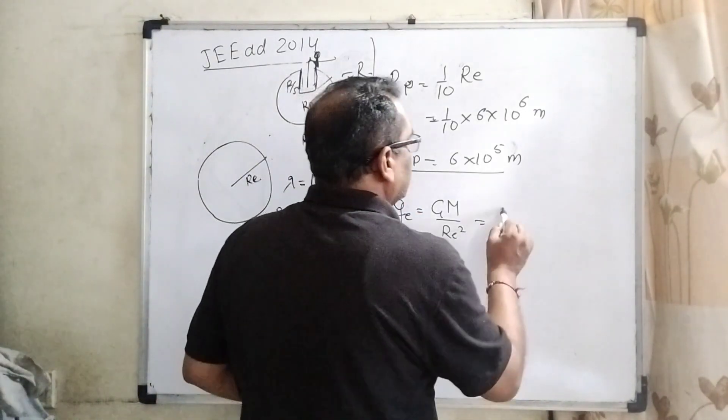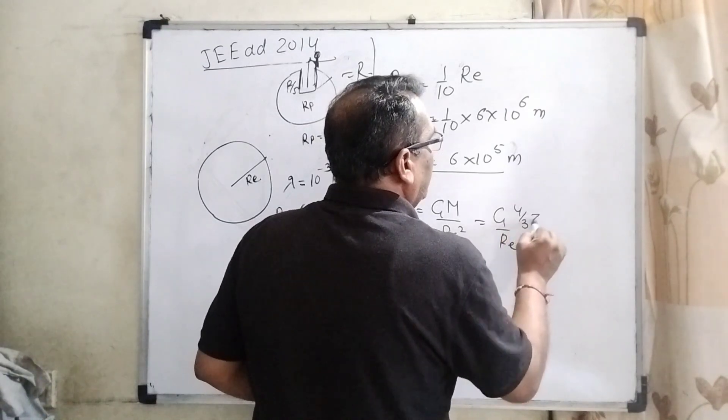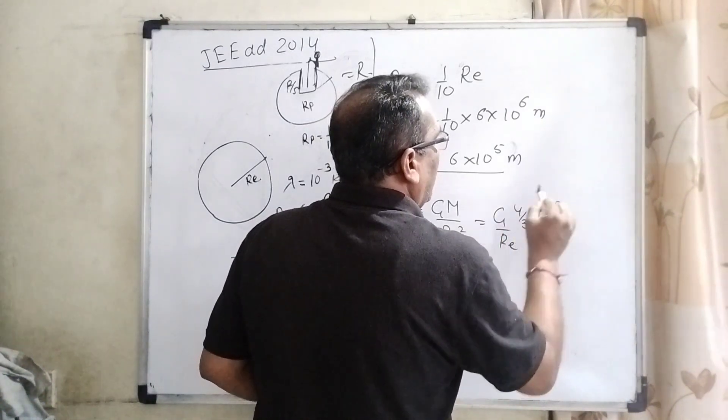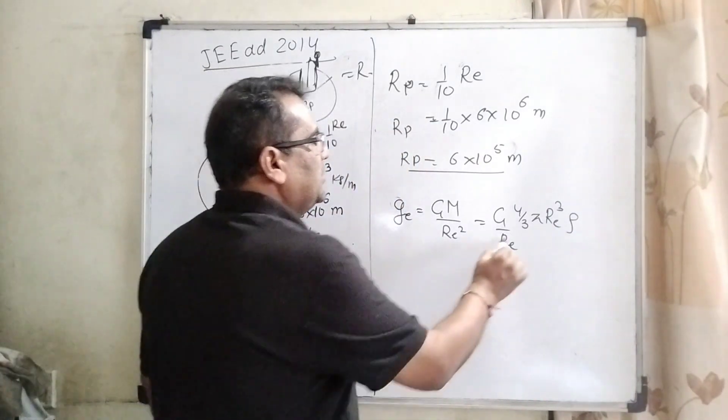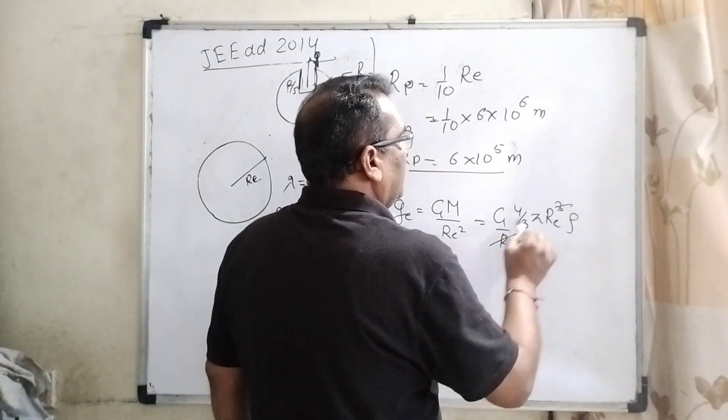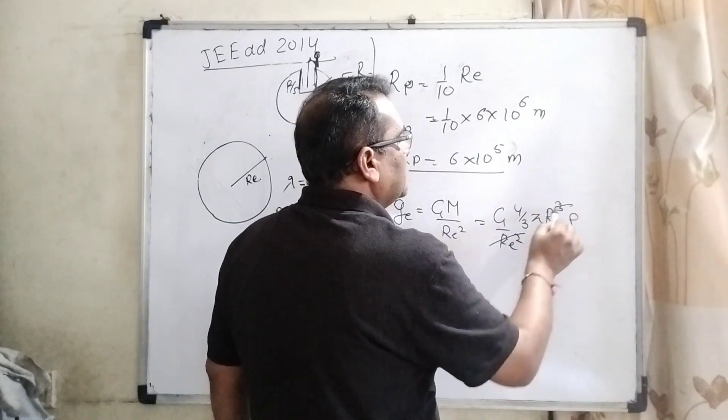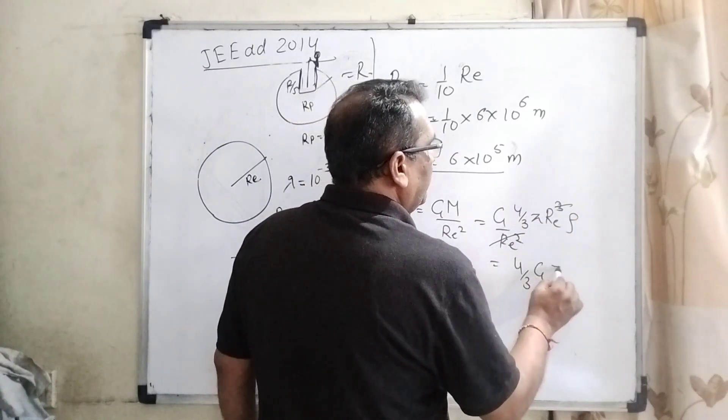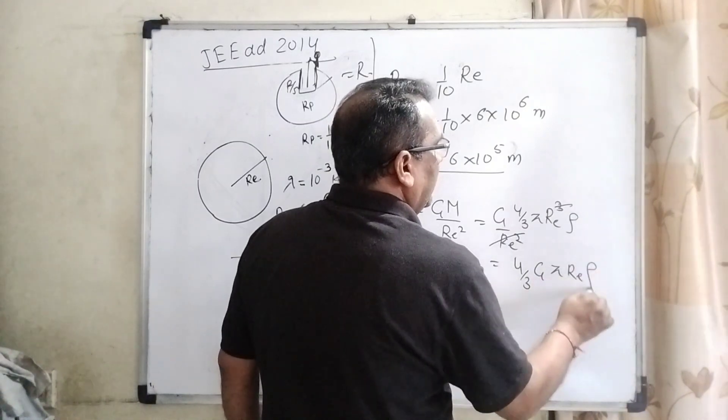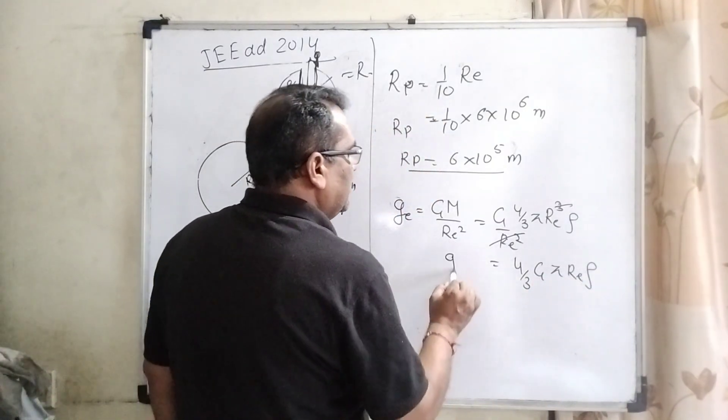And what is the mass? Mass is 4 by 3 pi R cube and density rho. It is Re square. Here Re cube, two R is cancelled out, one R is remaining only. 4 by 3 G, pi, Re and density. This is gE.